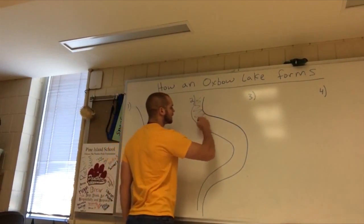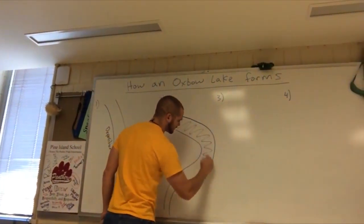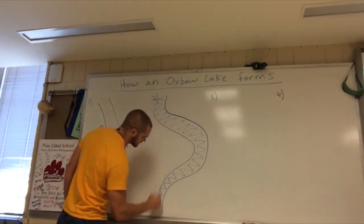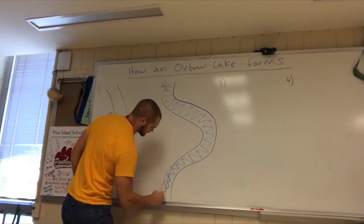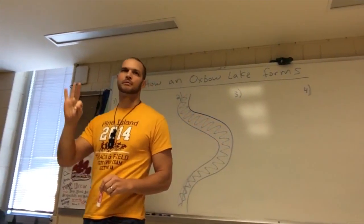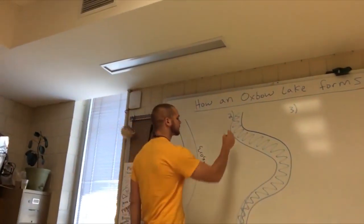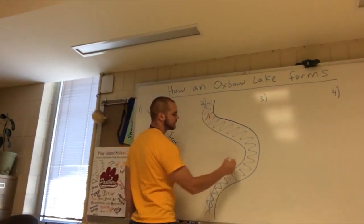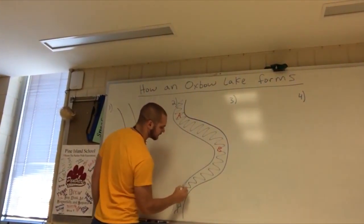So, here's our river. Now, if you look, now it looks like we have three corners, don't we? Here's a corner. Here's corner A. Here's corner B. Here's corner C.